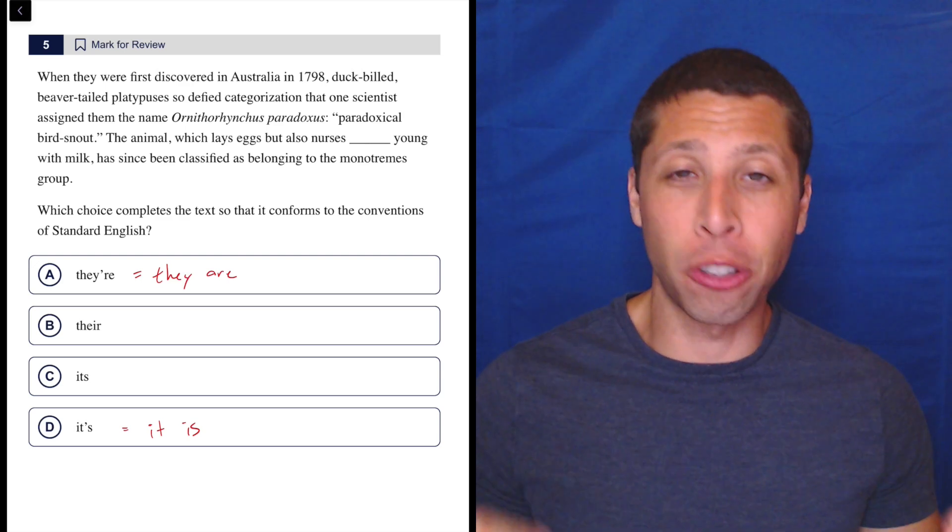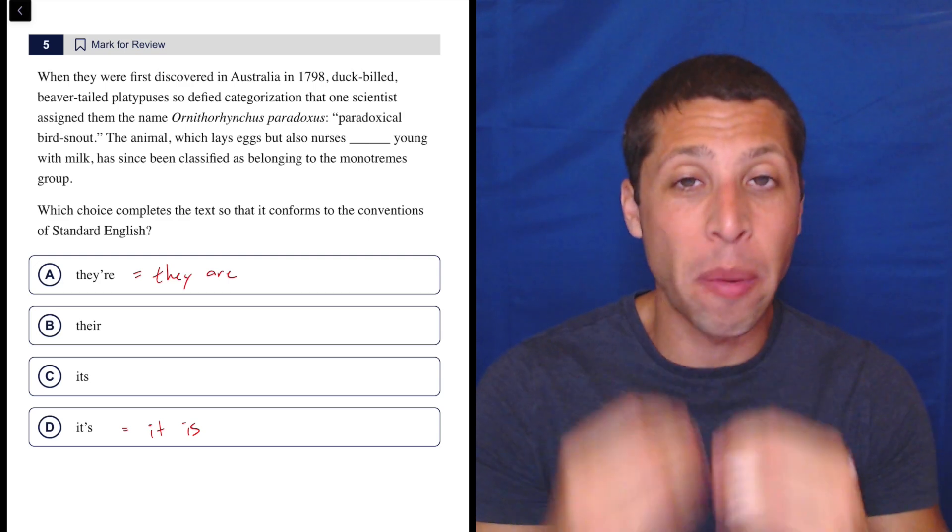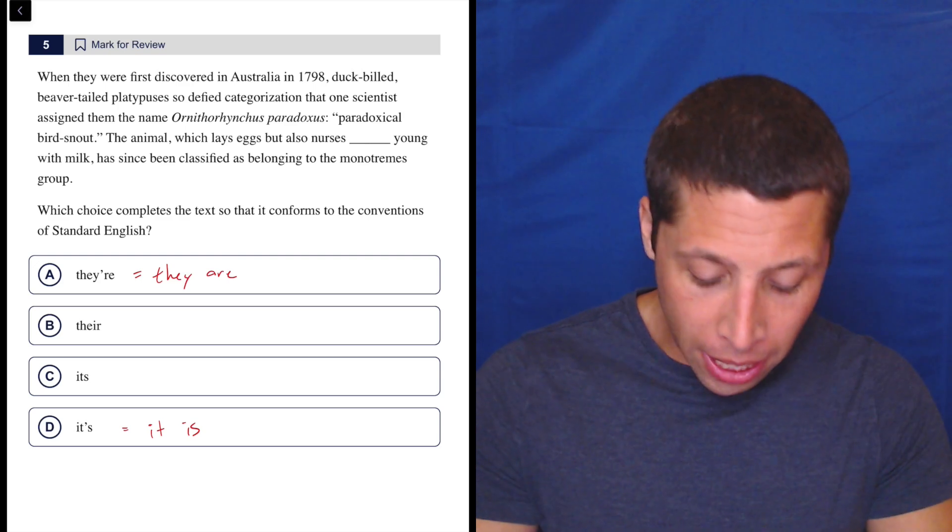Remember, possessive pronouns, for whatever reason in English, do not get apostrophes, even though most other words do get apostrophes when we make them possessive. Pronouns are different. So it's probably not A or D.